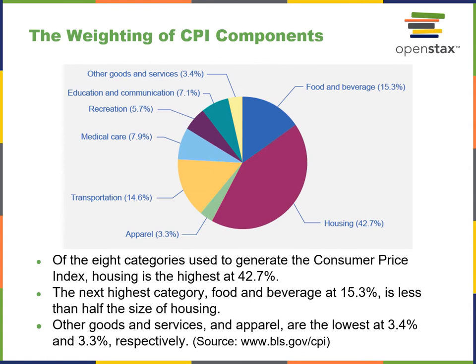The weighting of CPI components — you can see a sample pie chart here. Housing usually comprises the largest percentage of normal people's income, followed by food and beverage. These are the eight categories used to generate a Consumer Price Index. Housing is the highest, and you work your way down from there.